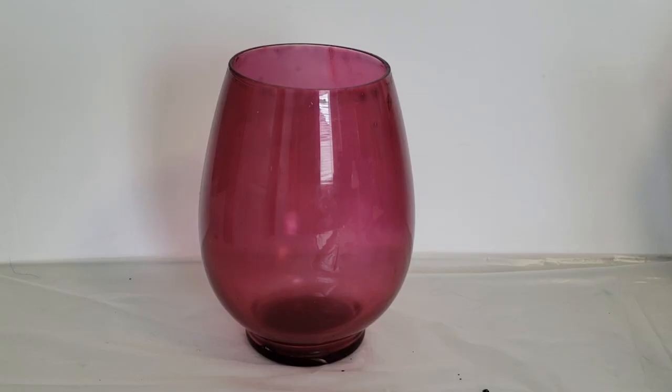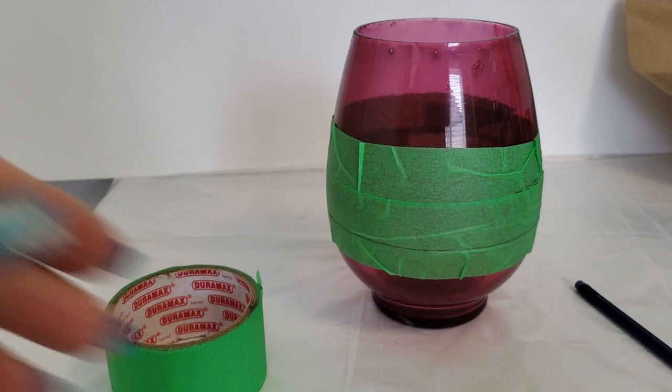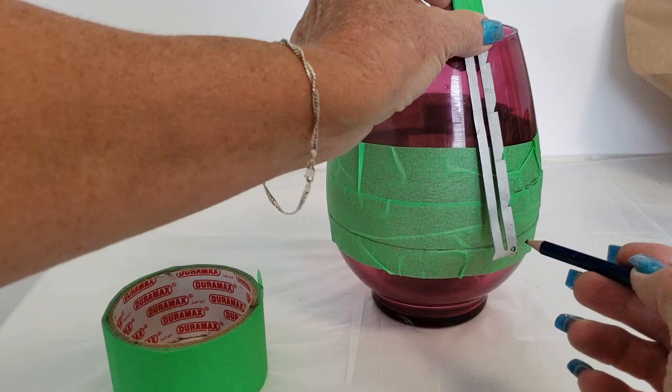I used two inch painter's tape although it doesn't really matter you can just use multiple layers. And then I took this little sewing ruler here to put my pencil in and then I just went around the bowl like this.